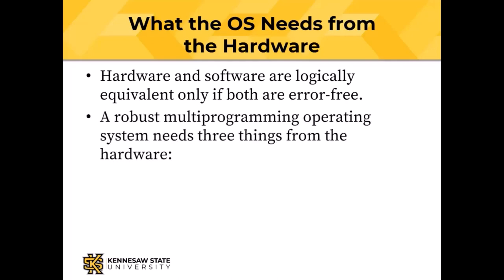If I'm going to have a multi-programming system that is robust — remember multi-programming is running more than one program at a time — that robust multi-programming system needs three things from the hardware, and I guarantee this is on the final exam. The operating system needs, from the hardware, privileged instructions.